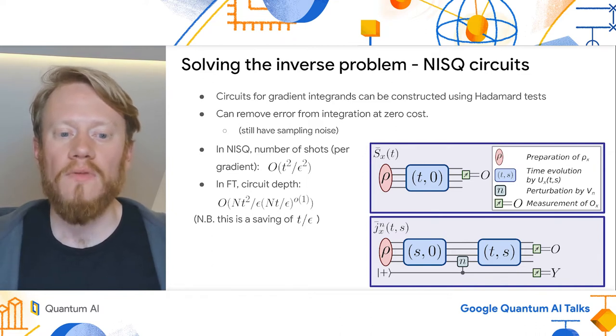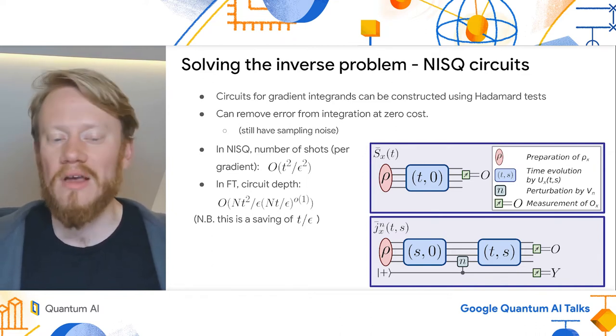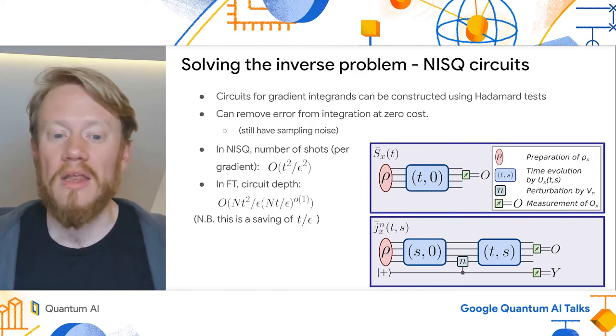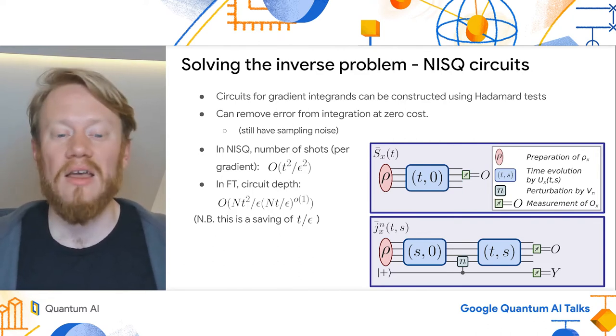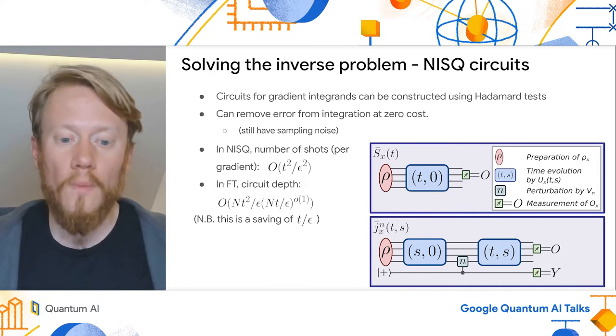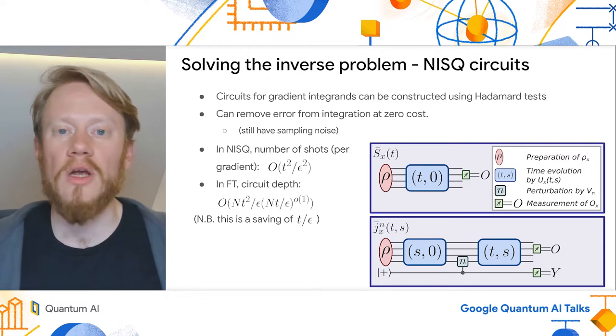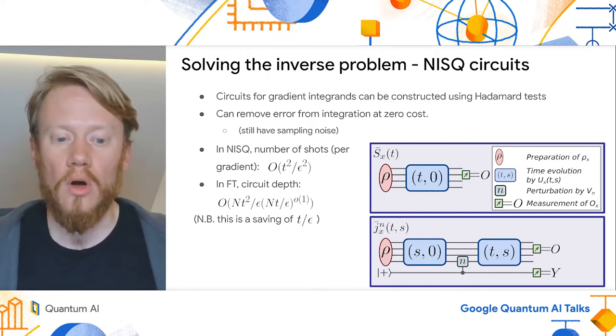We still have to integrate the output of this circuit over s in order to estimate the target gradient, but recall that in a NISQ setting, we have to repeat these circuits many times anyway in order to estimate the target expectation values. So in principle, one can draw s at random for each repetition, effectively performing the integration Monte Carlo style at no additional cost.